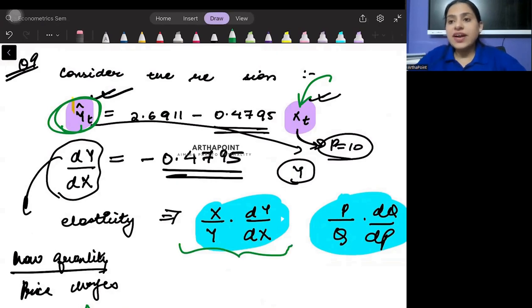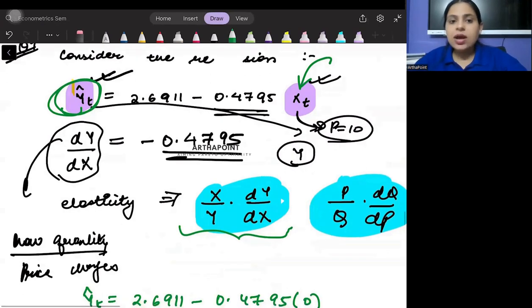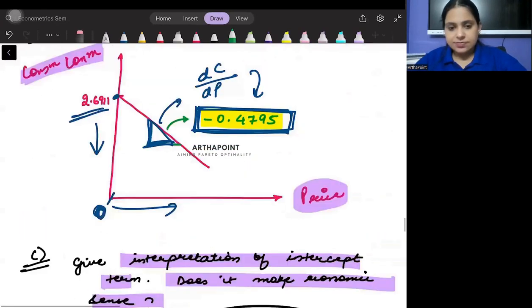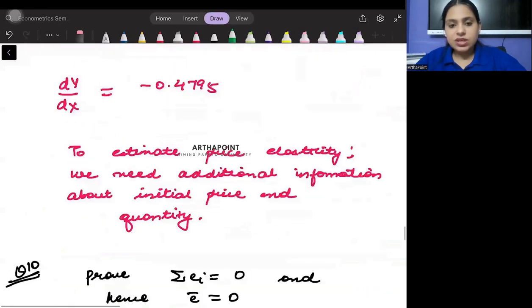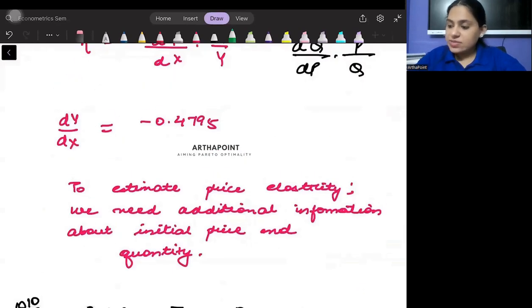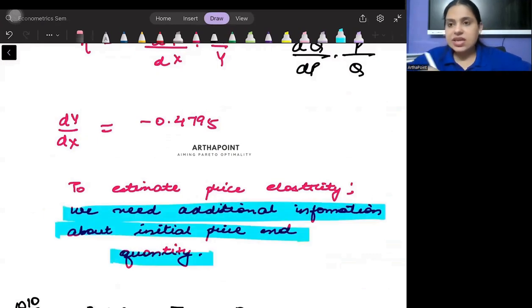So I need to know the value of price to find the quantity and therefore to find the elasticity. As of now, all I can do is find the slope of this regression line, but I cannot find the elasticity. Am I clear with it? This is what I have written here: to estimate price elasticity, we need additional information about initial price and quantity.